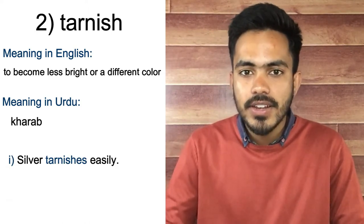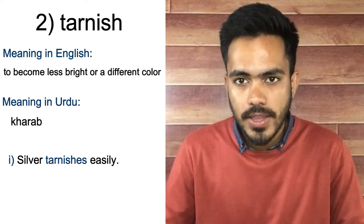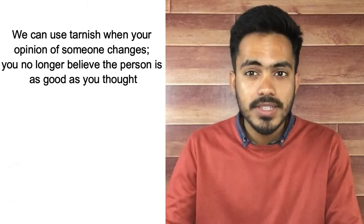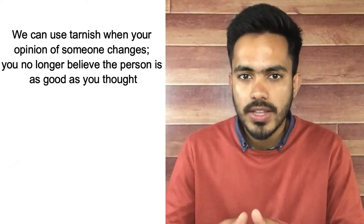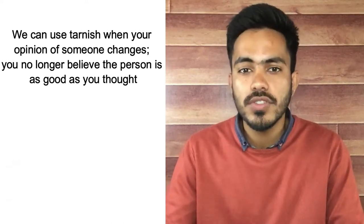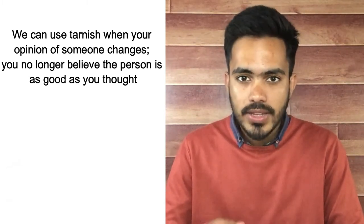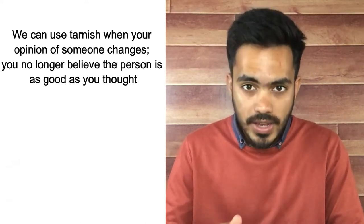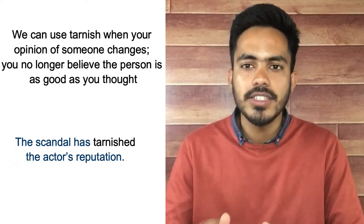For example: 'Silver tarnishes easily' — meaning silver becomes dull easily. We can also use tarnish when your opinion of someone changes and you no longer believe the person is as good as you thought. If you were a big fan of an actor and a scandal came out that made you realize he is not as good a person as you thought, we say: 'The scandal has tarnished the actor's reputation.'